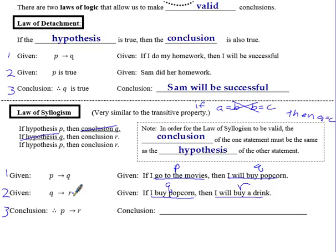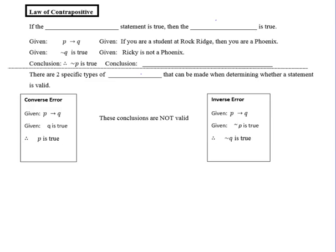So now what valid conclusion can I make? Well, if I go to the movies and buy popcorn, if I buy popcorn, I buy a drink. I can cut out the middleman and conclude that if I go to the movies, then I will buy a drink. So notice we kind of rewrote an entire new if-then statement. So that's law of syllogism.